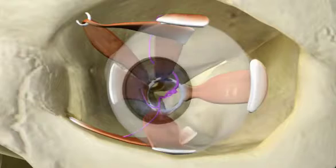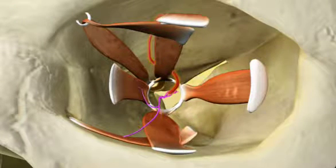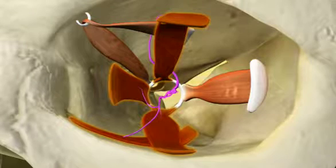In the orbit, the oculomotor nerve divides into a superior and an inferior division. These divisions innervate five extraocular muscles.